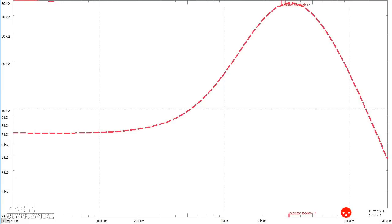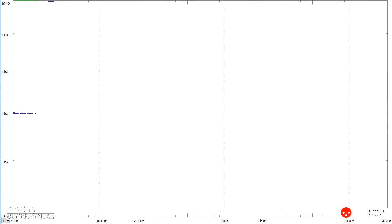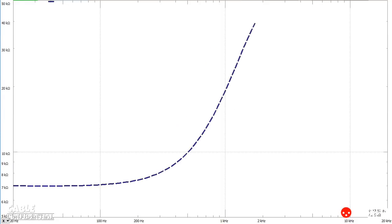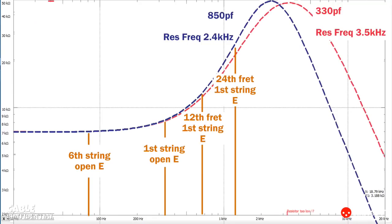Now we'll run it again, only this time with the 850 picofarad guitar cable we tested earlier. And now let's compare the two curves. As you can see, with the additional 500 picofarads of capacitance on the second run, the resonant frequency shifted lower from 3500 to 2400 Hz. The curves are pretty similar on the low side of resonance, but as expected the higher capacitance cable rolls off earlier, so more overtones will be attenuated.